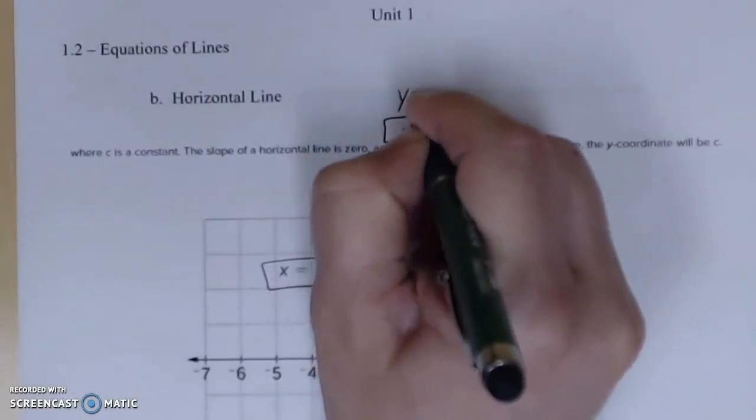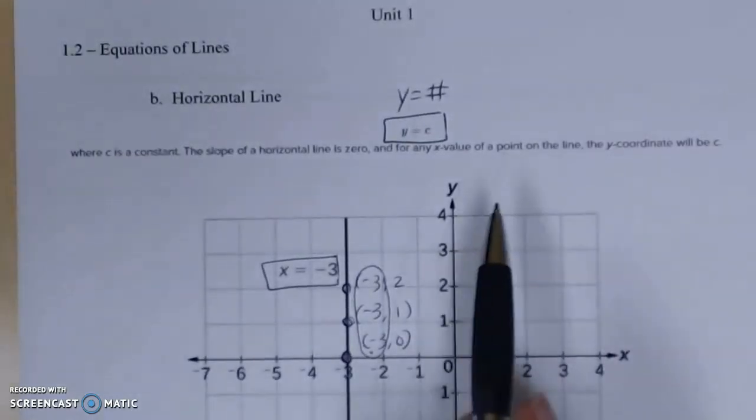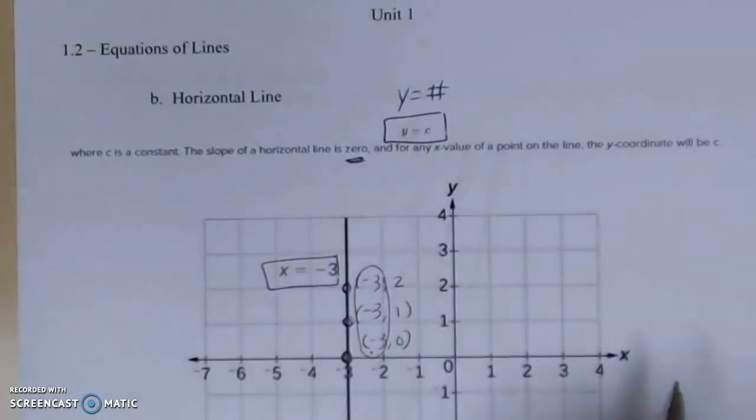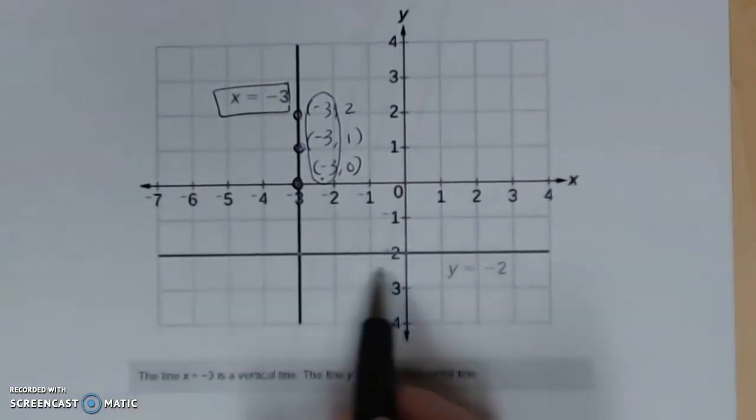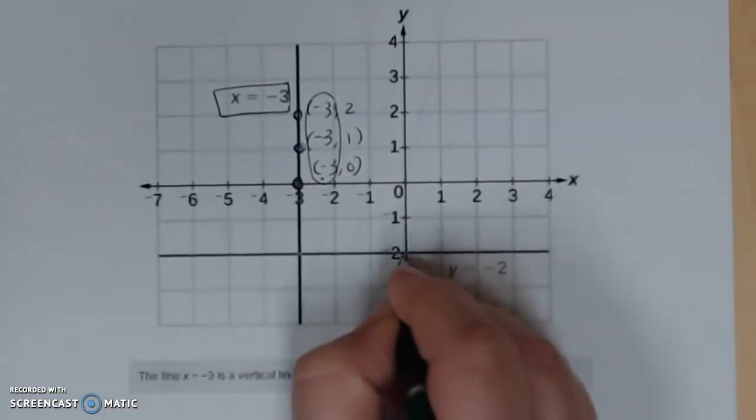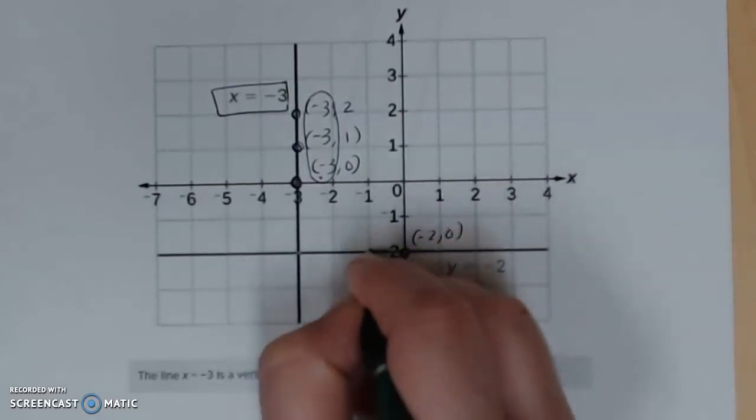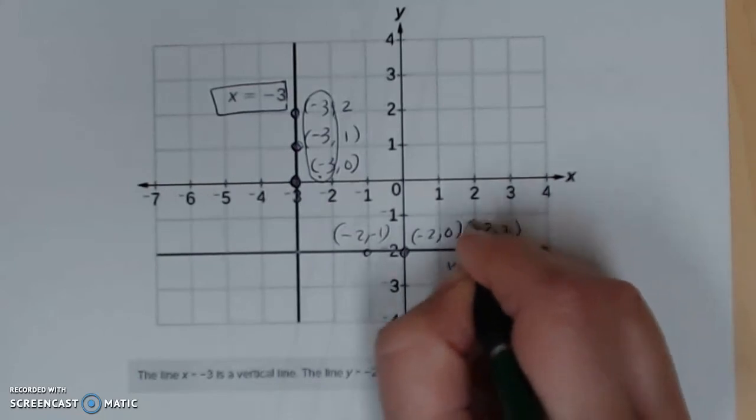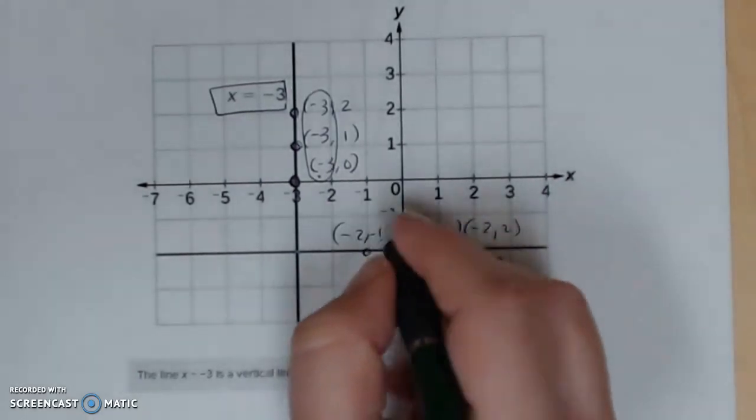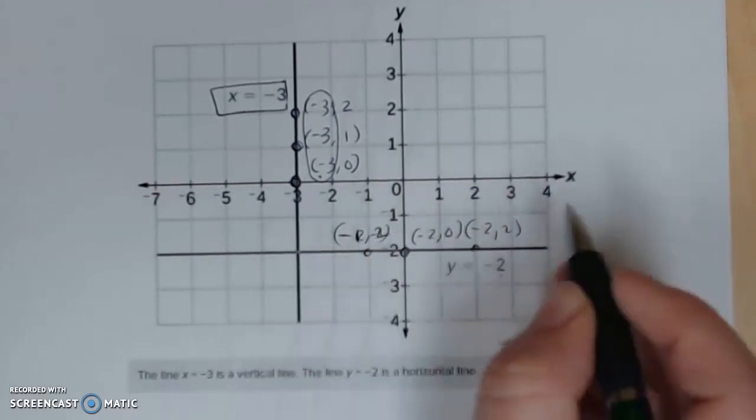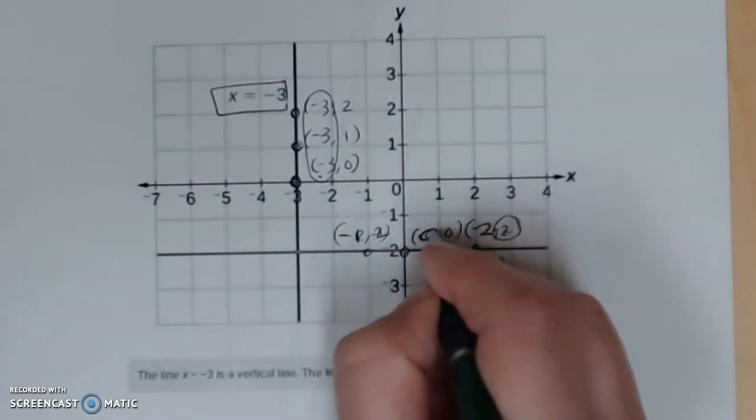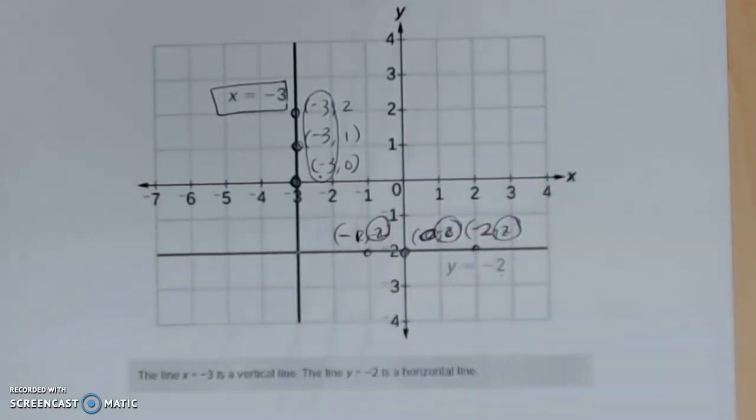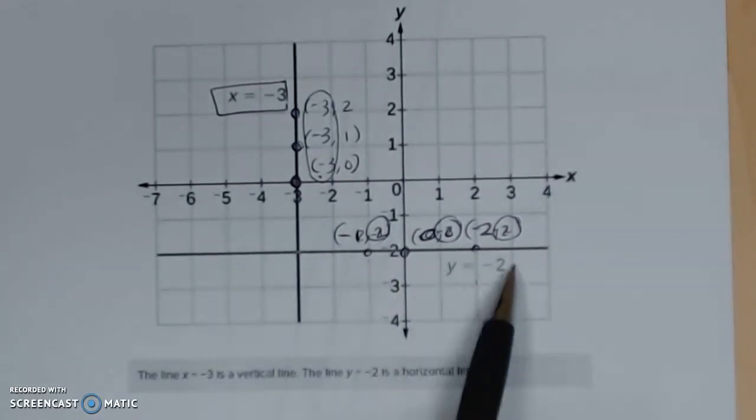Similar story for the horizontal line. It is y equals c, or just y equals a number, where c is the constant, and the slope of the horizontal line is 0. For any x value of the point on the line, the y-coordinate will be c. Here's my horizontal line, y equals -2. If I pick points along here: (-2, 0), (-1, -2), (2, -2). You can see they all have this -2 value as you go. That's what we're honing in on, and we say this is a horizontal line of y equals -2.